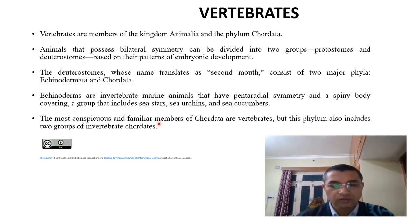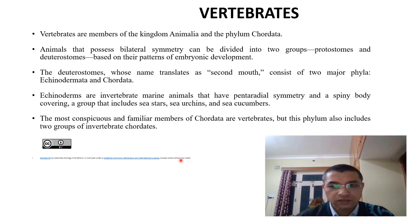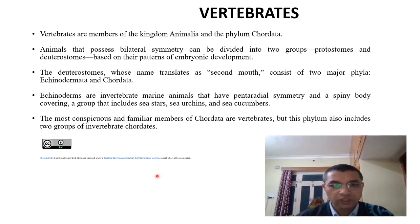Echinoderms are marine animals and are an example of invertebrates; they have pentaradial symmetry. In the case of chordates, the most diverse group is Pisces, which is a superclass — I will tell you more about that in coming lectures. To summarize: all vertebrates are called chordates because chordates have two parts — proto-chordates and higher chordates — and vertebrates belong to the higher chordates. We also discussed protostomes, deuterostomes, and features of echinodermates. Thank you.